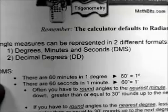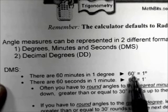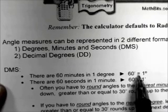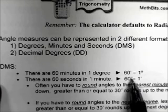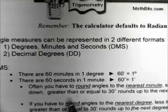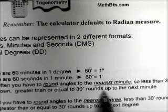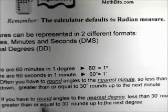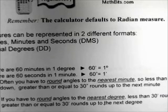For DMS, there are 60 minutes in one degree — noted with a single tick mark — and 60 seconds in one minute, noted with a double tick mark. When rounding to the nearest minute: less than 30 seconds rounds down; 30 seconds or more rounds up. When rounding to the nearest degree: less than 30 minutes rounds down; 30 minutes or more rounds up.